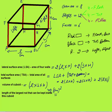Volume will come in centimeter cube, and area will come in centimeter square. So lateral surface area and total surface area will be in centimeter square, while volume will be in centimeter cube.